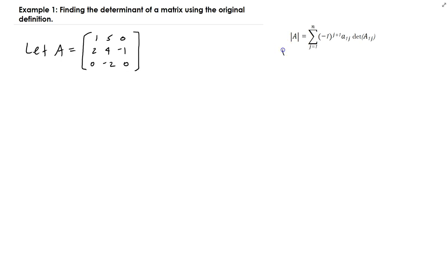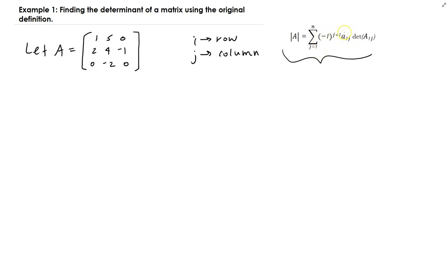We're going to use this formula to find the determinant of A. The way this works is that I refers to the row number and J is referring to the column number. So what we're going to do is take the summation from J equals 1 to N, and we're going to sweep across the columns in row 1.